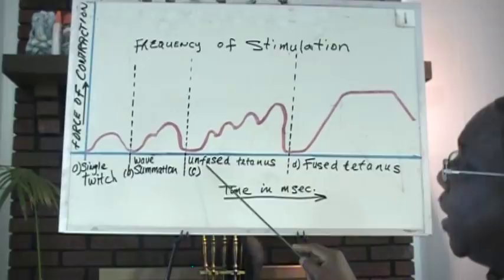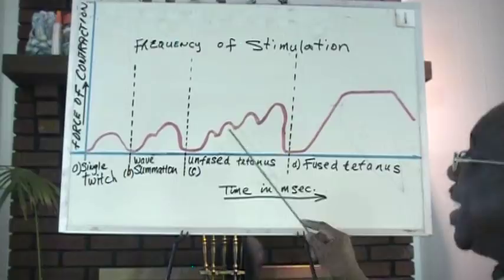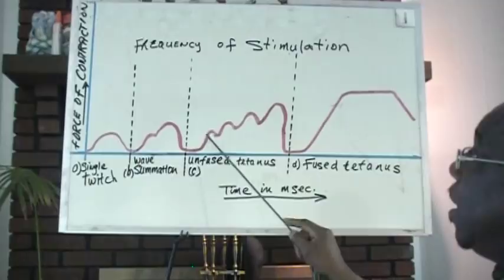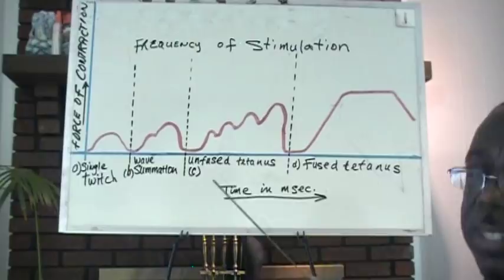The stimuli are occurring with enough time between them to allow a little bit of relaxation before the other one comes. So this in itself is a type of summation, but it's occurring at regular intervals. It gives you a condition called tetanus, but it's an unfused tetanus because you have these areas of relaxation in between it.